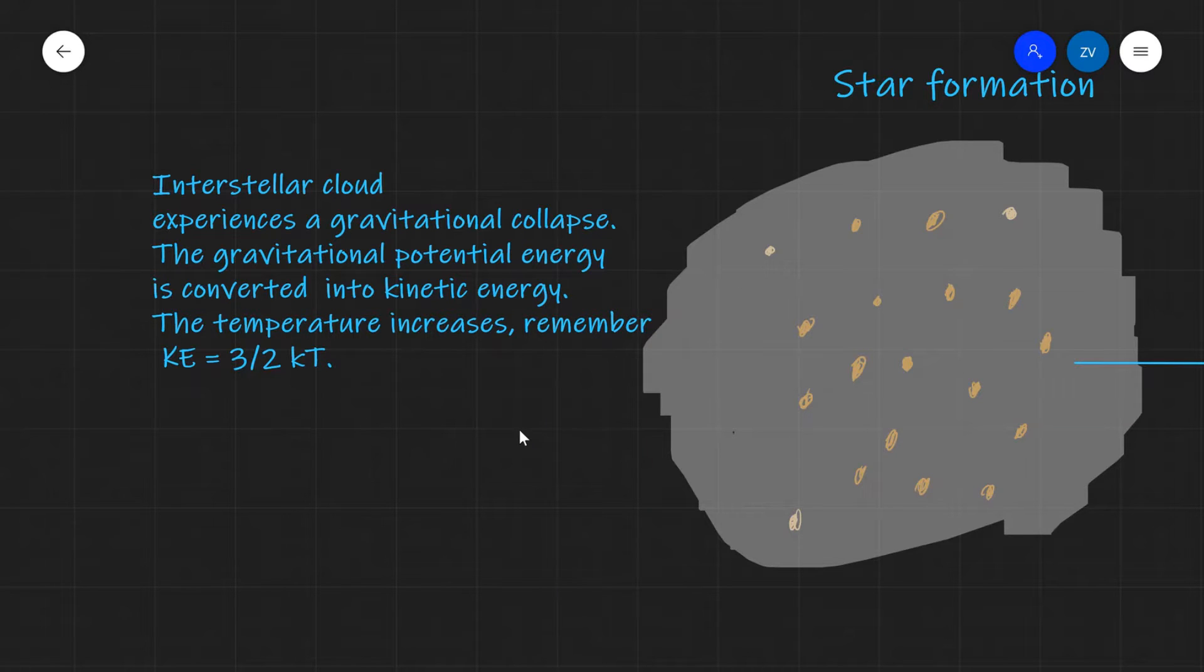Now as the particles are moving closer together, they're all going to want to collapse towards the center. When that happens, gravitational potential energy is directly converted into kinetic energy. However, remember, because kinetic energy is equal to 3/2 times Boltzmann's constant times T, if the kinetic energy increases, well so does the temperature.